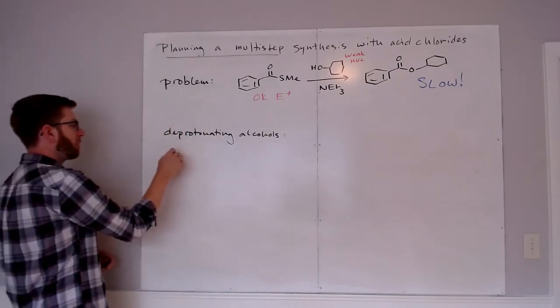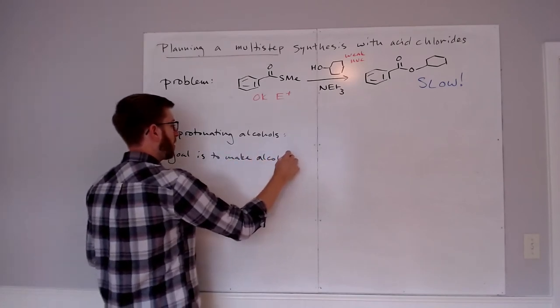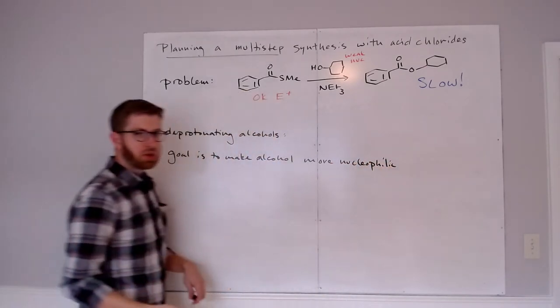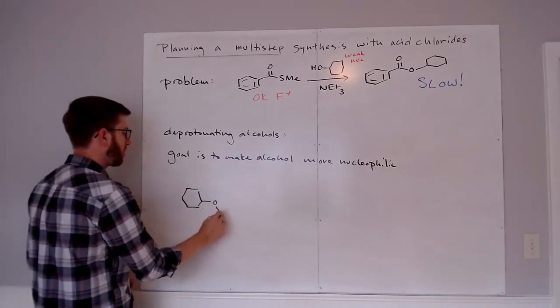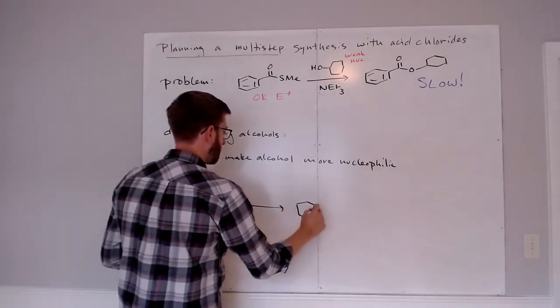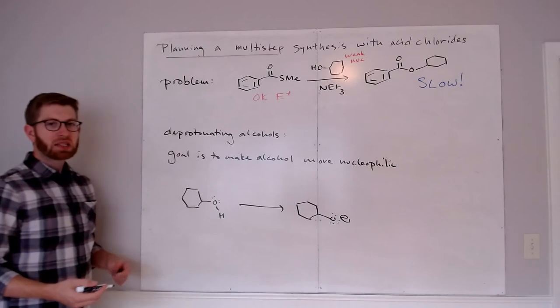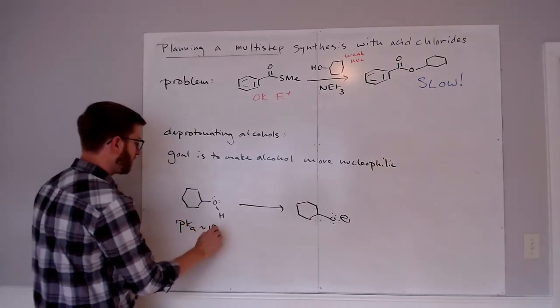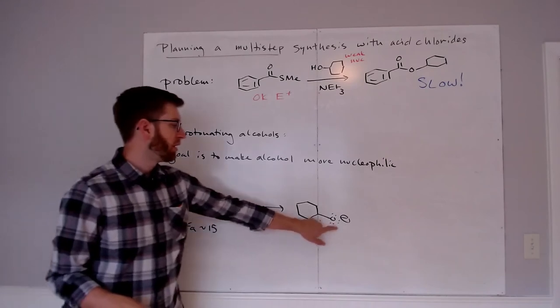Instead, what we would want to focus on is maybe we could convert this alcohol into a better nucleophile by deprotonating it. So our goal is to make our alcohol more nucleophilic. And we do that by turning it into an oxygen that's more electron rich, localizing a third lone pair on oxygen. We need a base to do that.